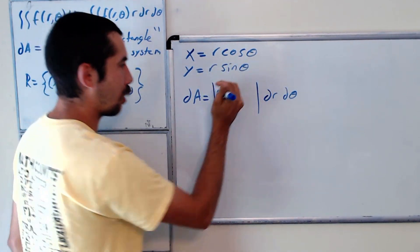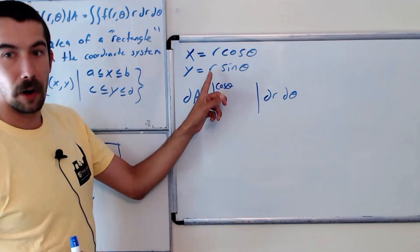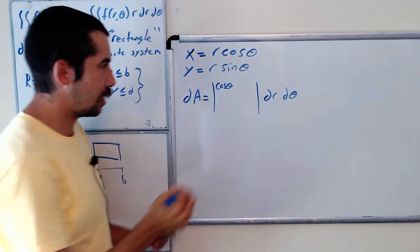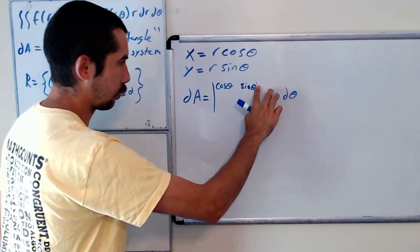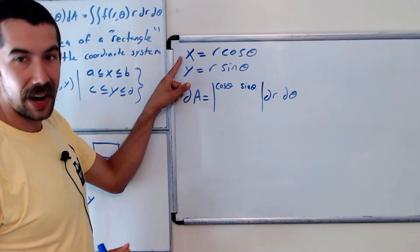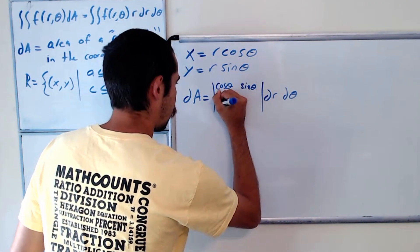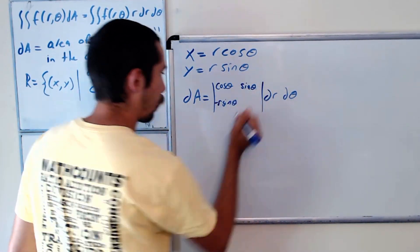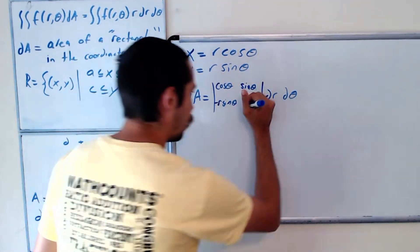So the partial of x with respect to r is cosine theta. The partial of y with respect to r is sine theta. The partial of x with respect to theta is negative r sine theta. And the partial of y with respect to theta is r cosine theta.